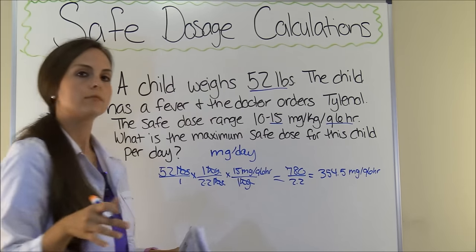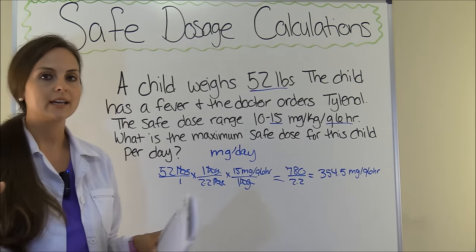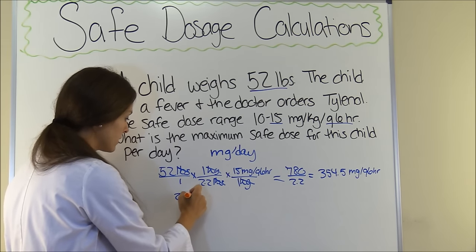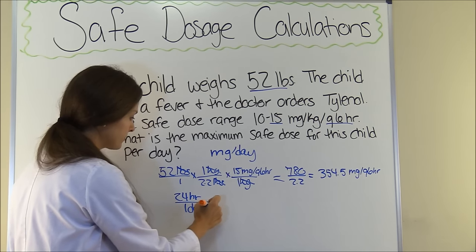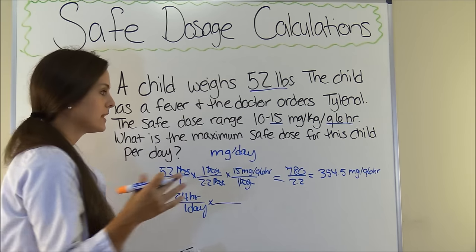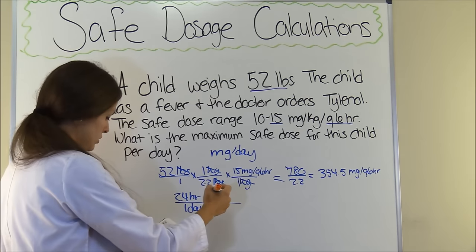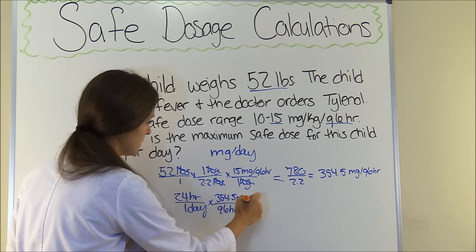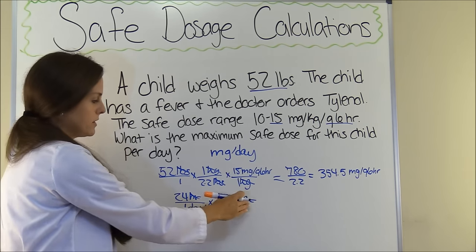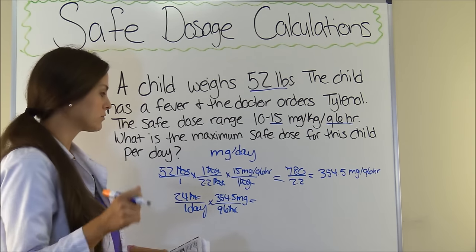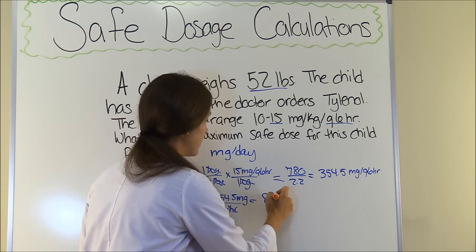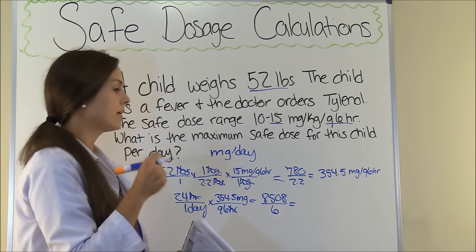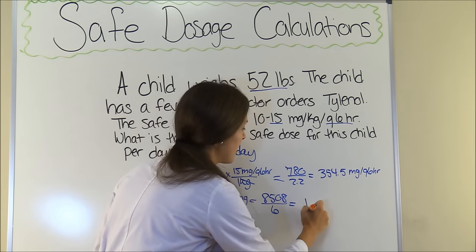Now let's figure out how much they can have per day. Using dimensional analysis: there are 24 hours in one day, and for this dose given every six hours the child can have 354.5 milligrams. Setting this up: 24 hours per day × 354.5 milligrams per 6 hours. Hours cancels out, leaving milligrams per day. Multiply: 24 × 354.5 = 8508, divided by 6 = 1418 milligrams per day. That is our answer.